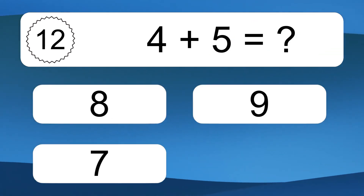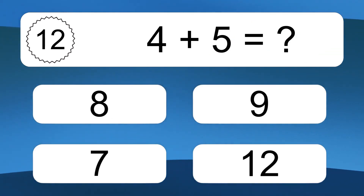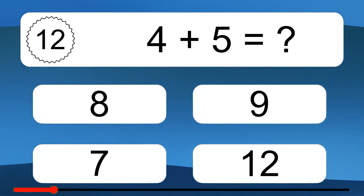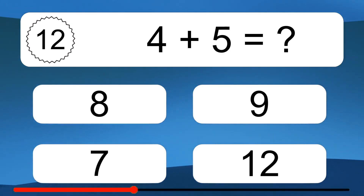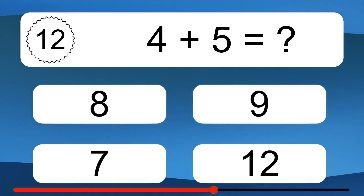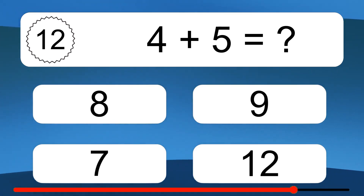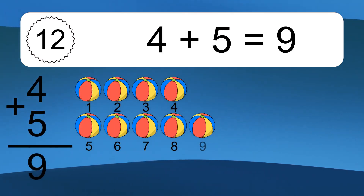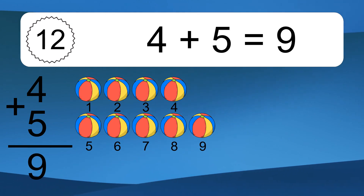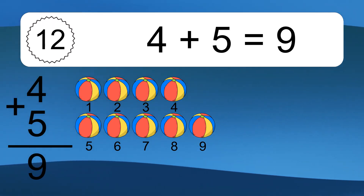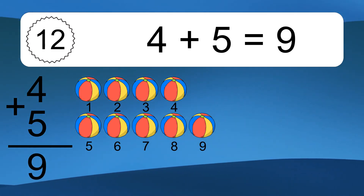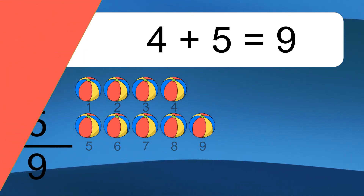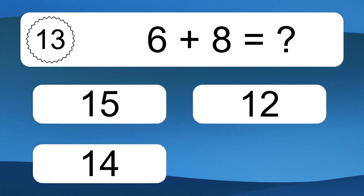4 plus 5 equals what? 4 plus 5 equals 9. Let's count it: 1, 2, 3, 4, 5, 6, 7, 8, 9. 6 plus 8 equals what?